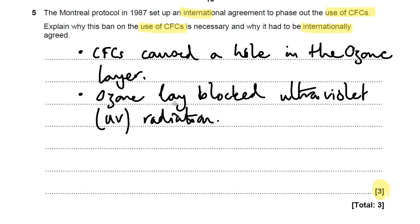You could say the converse of that: the hole in the ozone layer allowed UV radiation to come through. That would be fine — or that if there's a hole, the Earth would not be protected from the ultraviolet.